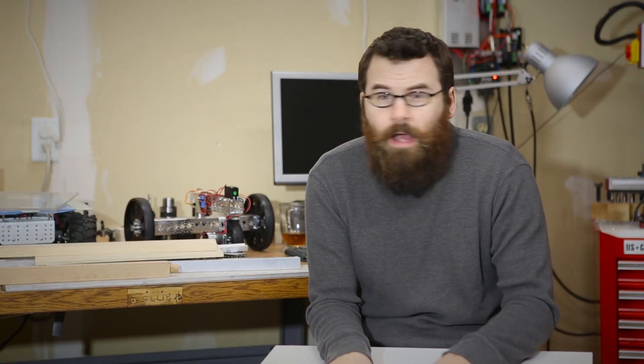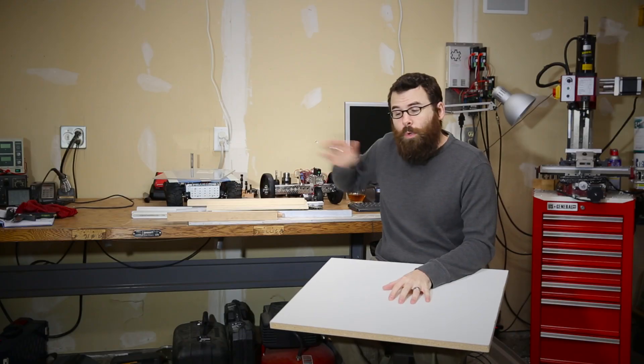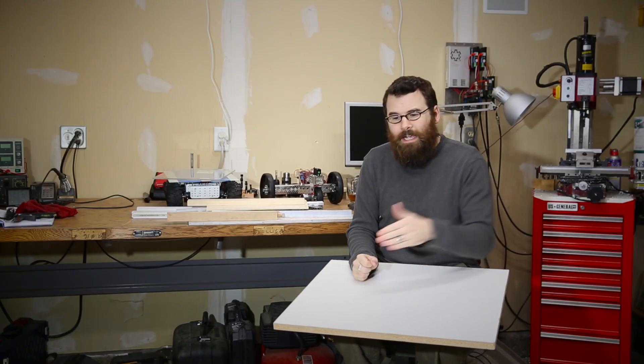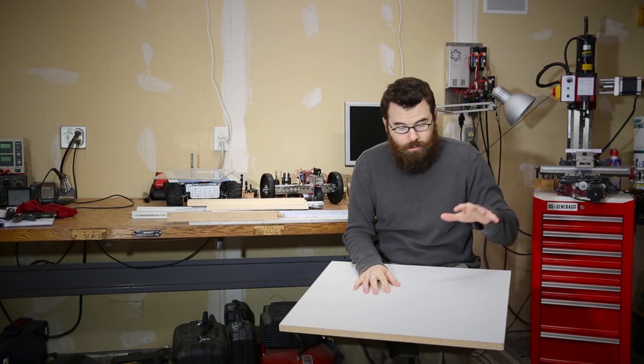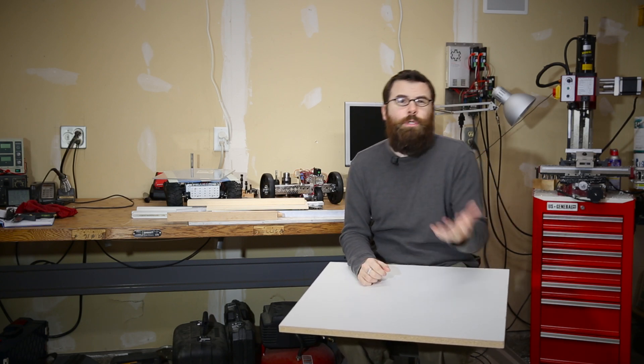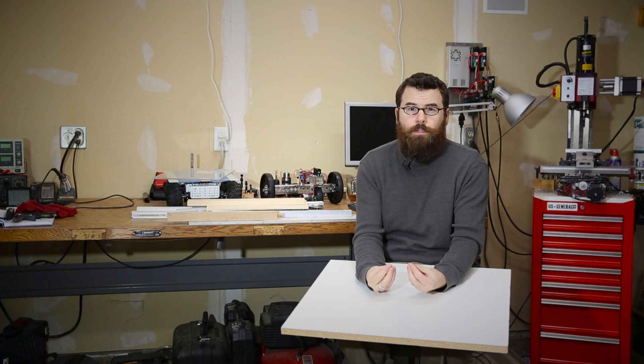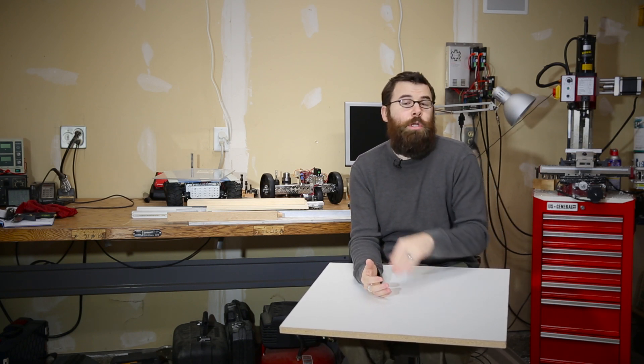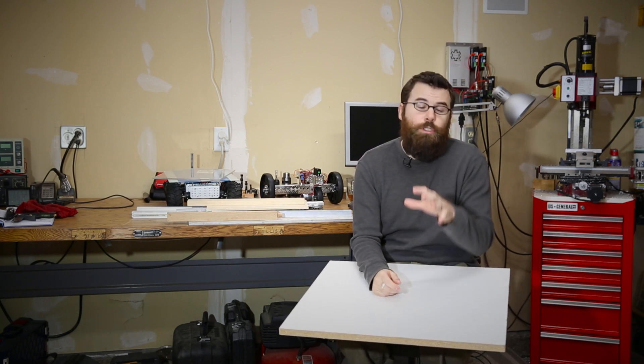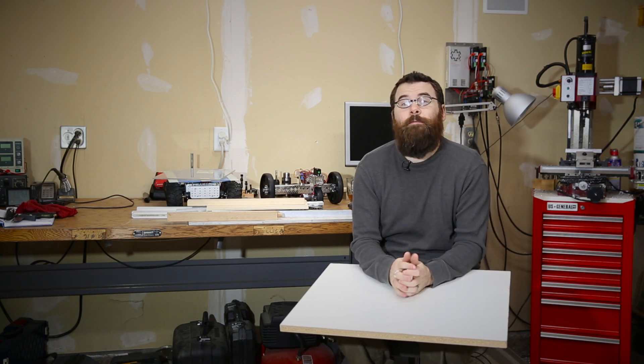One of the main differences between a particle board or an MDF as opposed to a real wood is wood actually has grain. So when you saw into it or cut into it it can actually follow the grain. Whereas with a particle board or an MDF there is no real grain. It is actually particles of wood held together with a binder so when you cut, drill, or machine it it leaves you with a much smoother and consistent finish.